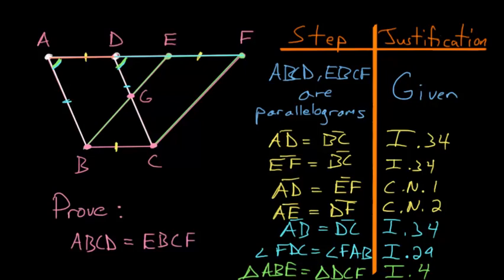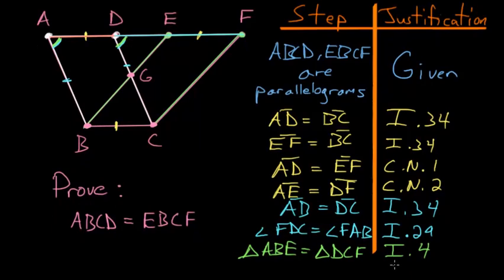And now what we want to do, since each of these triangles share this small triangle here, DEG in common, we can just use common notion number 3 and subtract that off.